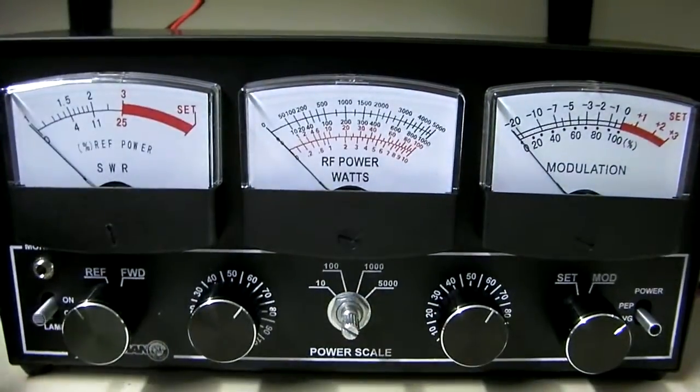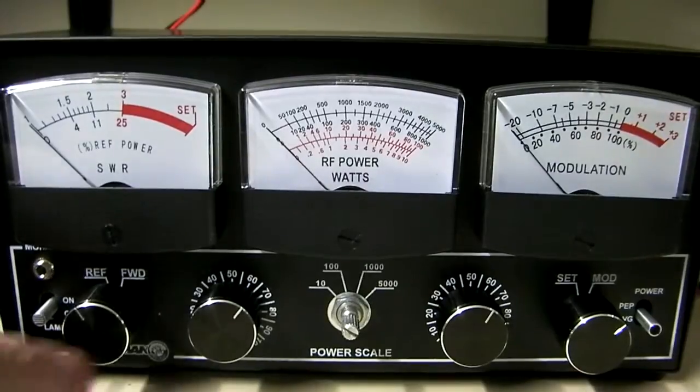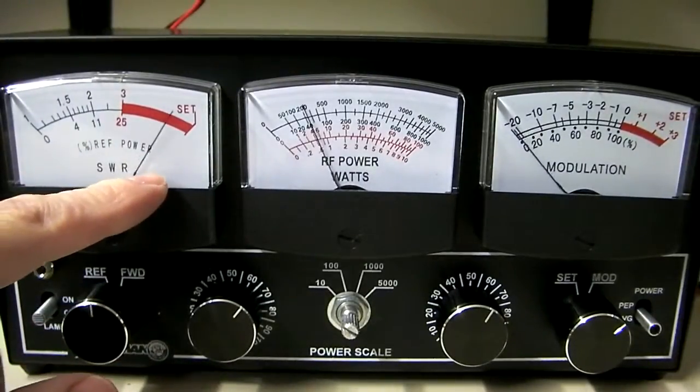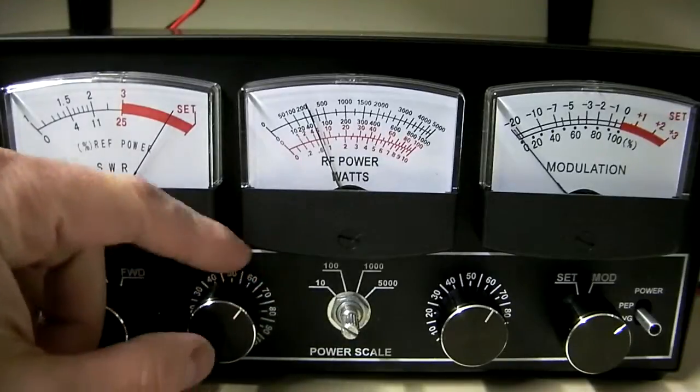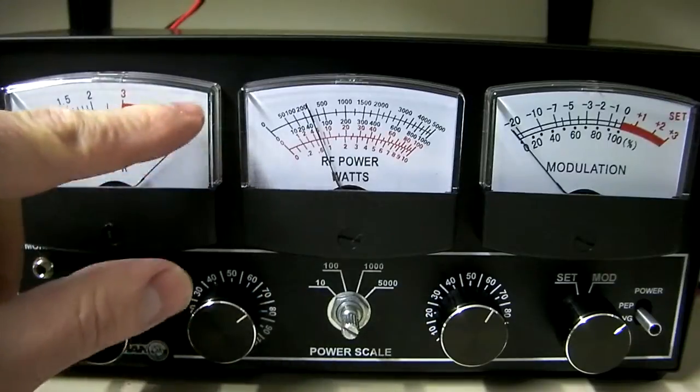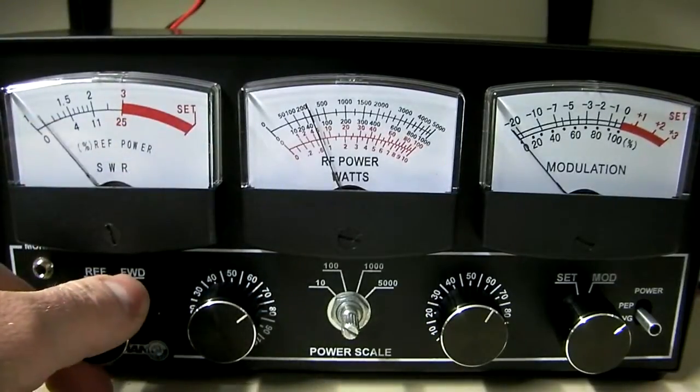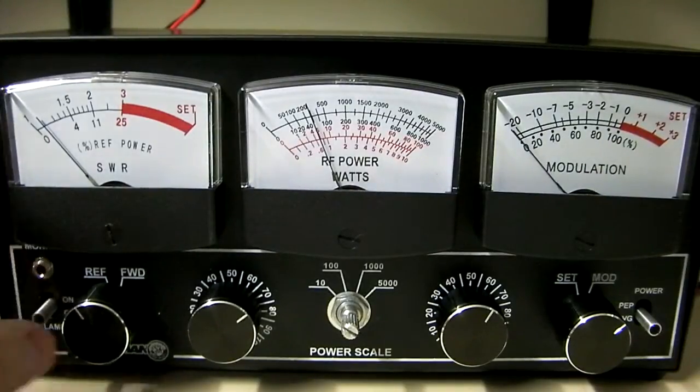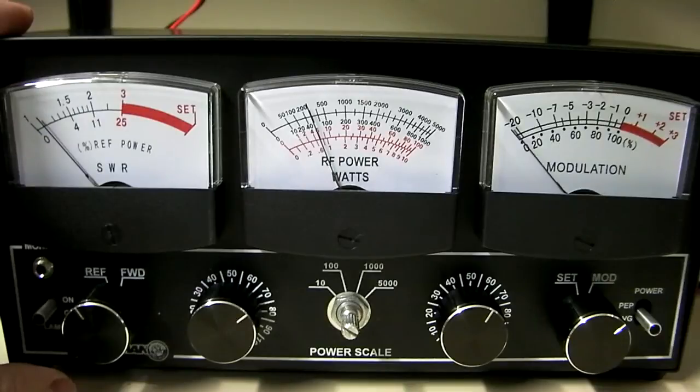First off, let's do SWR. SWR, you'll set it to the forward position. You'll key the radio. You'll use this knob here to set it to this set location on the meter here. You can flip it over to your reflect and see we've got a 1.1 SWR, which is what we should be at. So the SWR meter at this point seems fairly accurate.